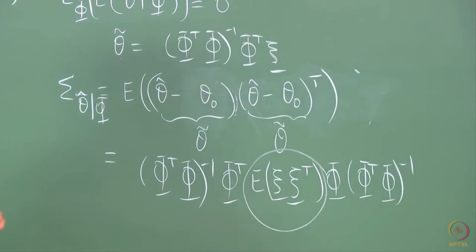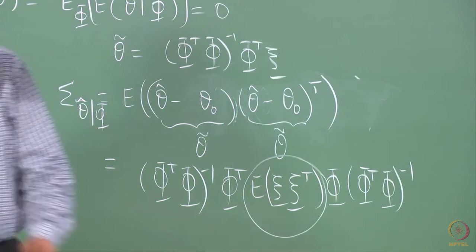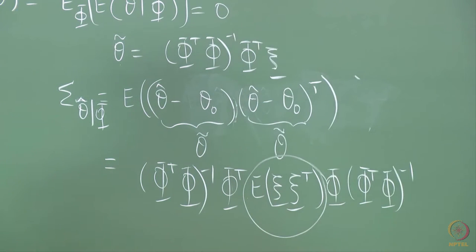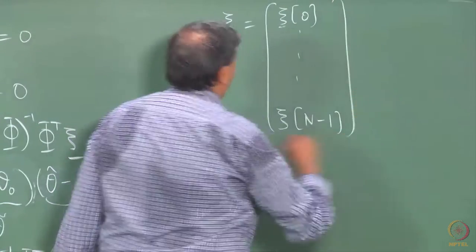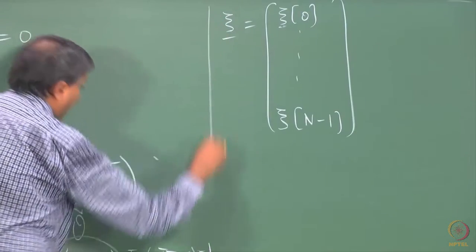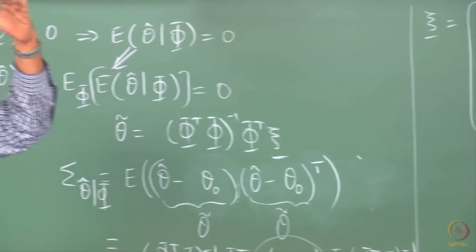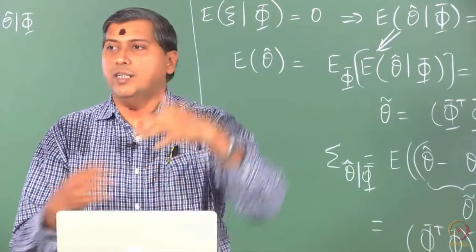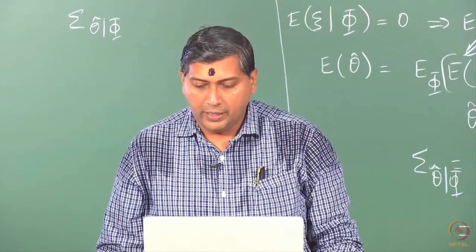What is that quantity? Expectation of Z times Z transpose. What is your Z? It is a vector of errors. You should recognize that this is a vector of errors from time 0 to N minus 1. Therefore, the expectation of ZZ^T is the variance-covariance of the vector of errors. At each instant, Z is a random variable. If you are thorough with the theory of random variables, all of this should be easy to follow.